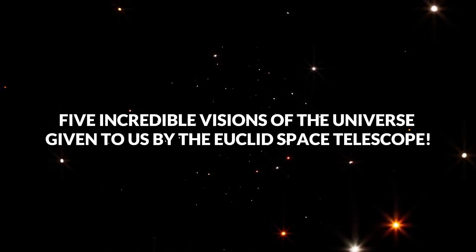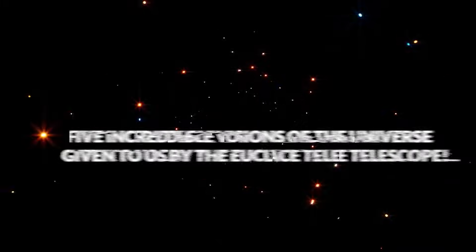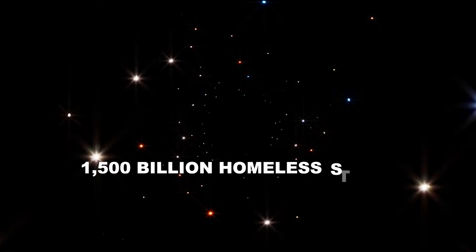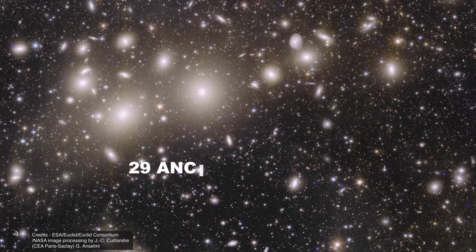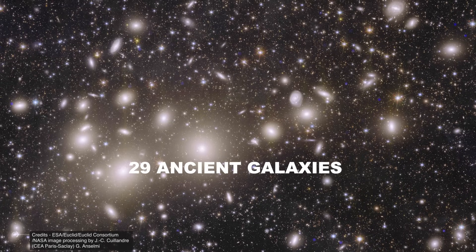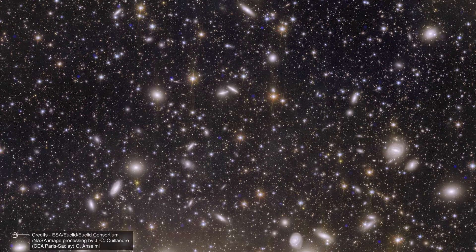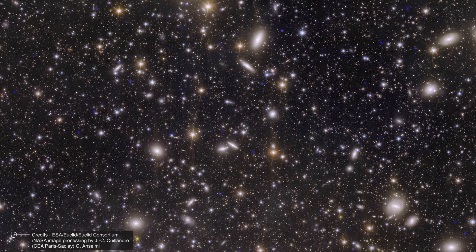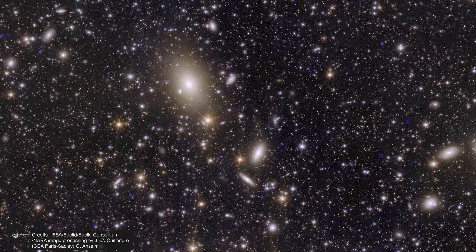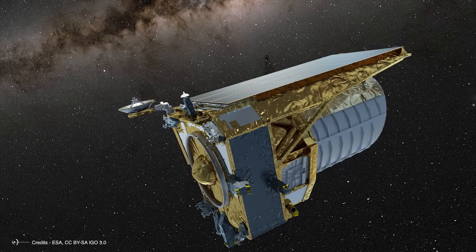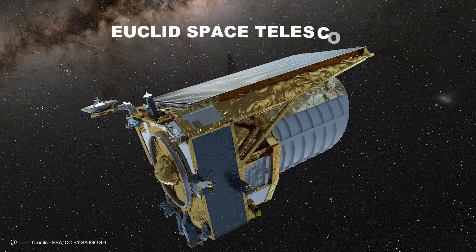Five incredible visions of the universe given to us by the Euclid Space Telescope. More than 1.5 trillion homeless stars wandering aimlessly, 29 ancient galaxies providing insights into the universe's first billions of years, and clouds of gas and dust with captivating colors, a total of 11 million objects revealed in visible light and another 5 million in infrared.